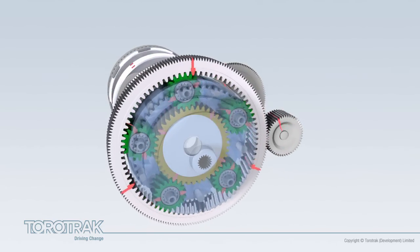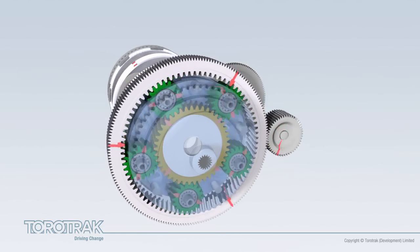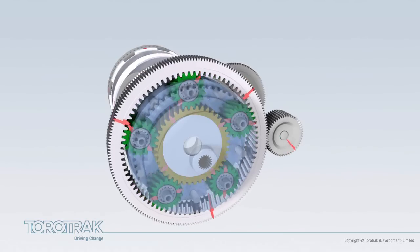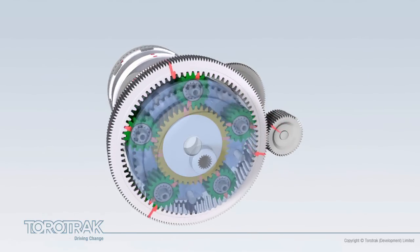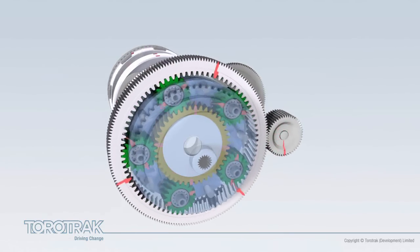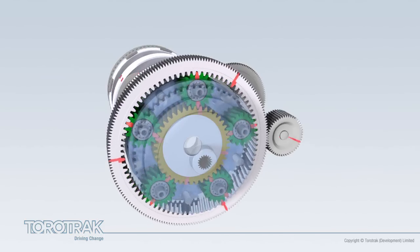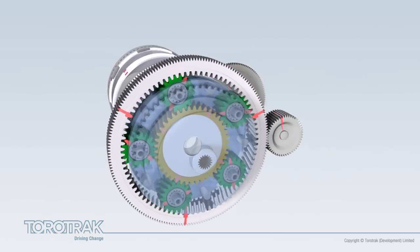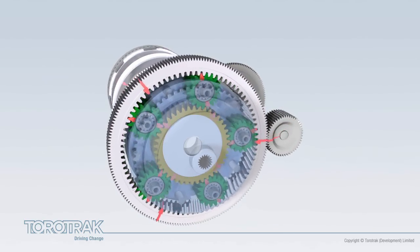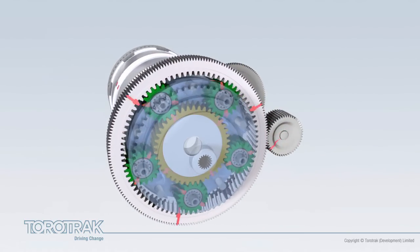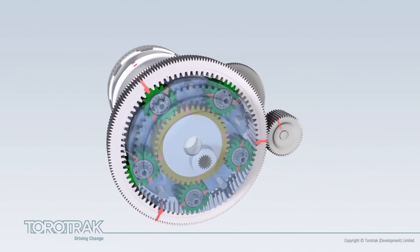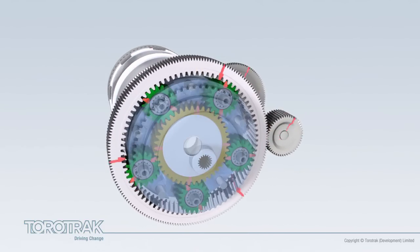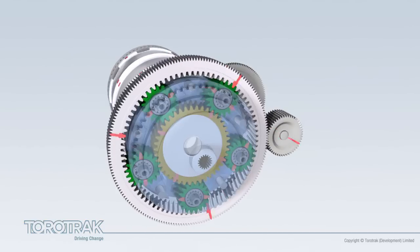The epicyclic gear train acts as a mechanical calculator. It subtracts the engine speed, at the sun gear, from the variator output speed at the annulus. If the difference between the engine speed and variator output speed is zero, then the transmission output is stationary. This condition is termed geared neutral.